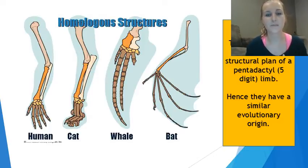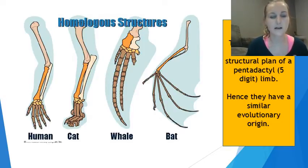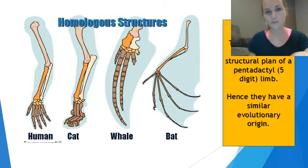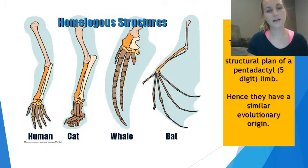These organisms have different functions: a bat's wing serves to fly, a whale's fin helps it swim, a human hand helps manipulate objects, and a cat's leg helps it walk. Yet they all share a similar structure — the pentadactyl five-digit limb — and look different from the outside.